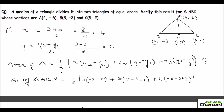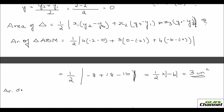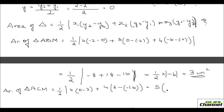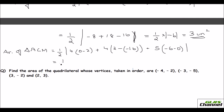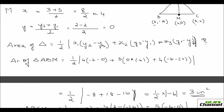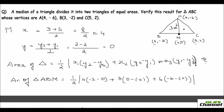Now for the area of triangle ACM with A(4,-6), C(5,2), M(4,0): area = half |4(2 - 0) + 4(0 - (-6)) + 5(-6 - 2)| which simplifies to half |-8 + 32 - 30| = half |-6| = 3 square units. Both triangles have area 3 square units, which proves that the median divides the triangle into two triangles of equal area.